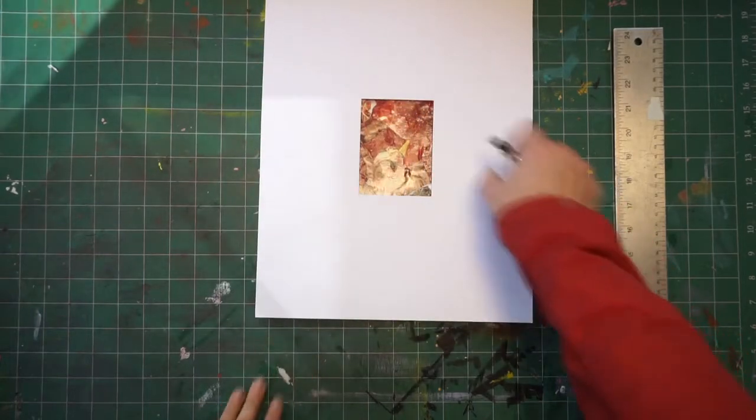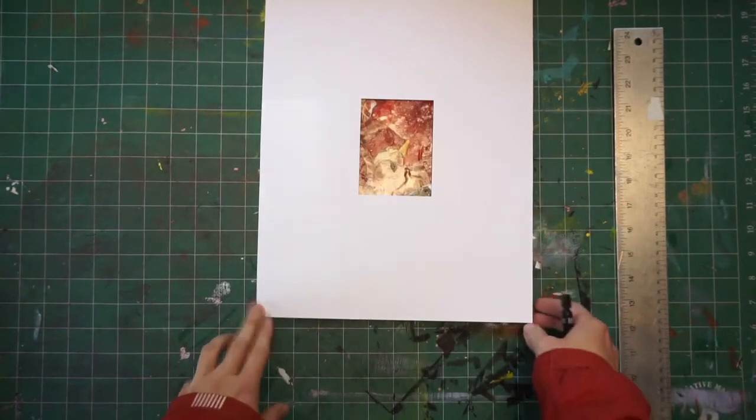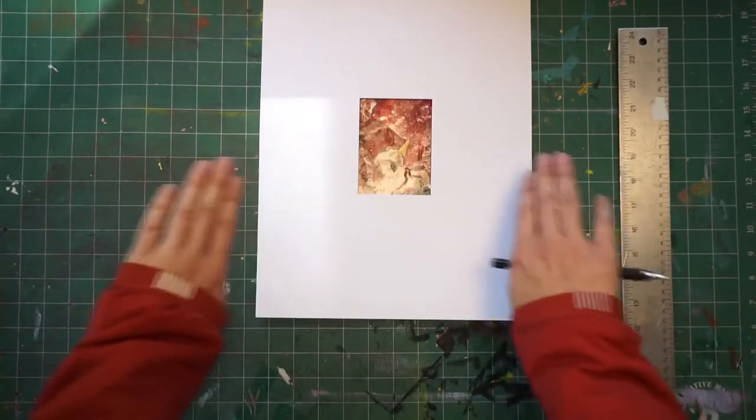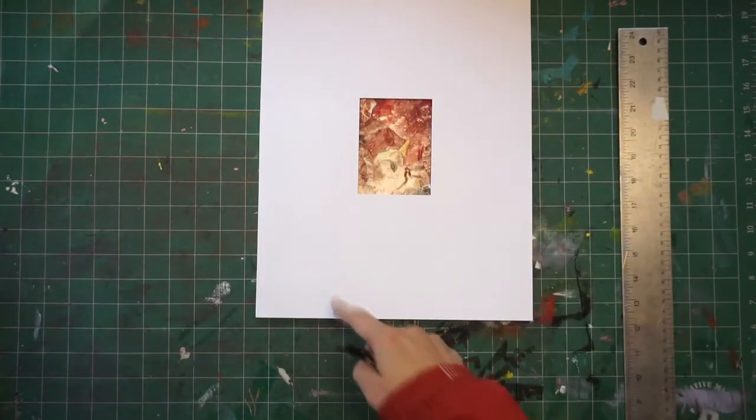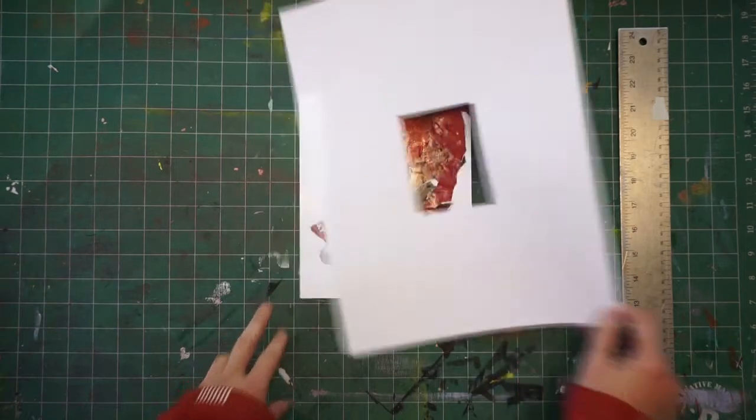I like to use a large 11 by 14 inch piece of bristol because it really does start to isolate the visual noise that exists around the image that you're studying.